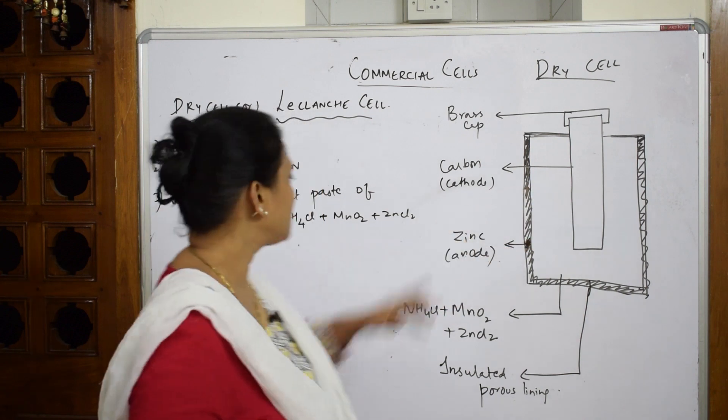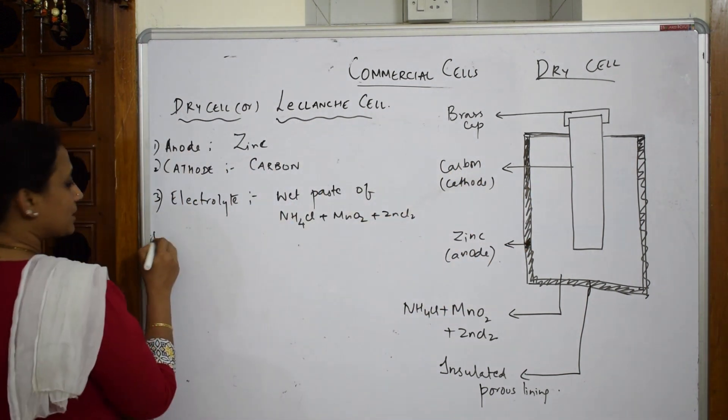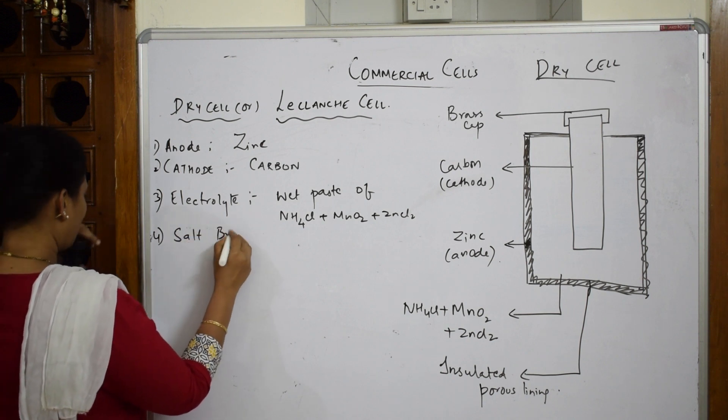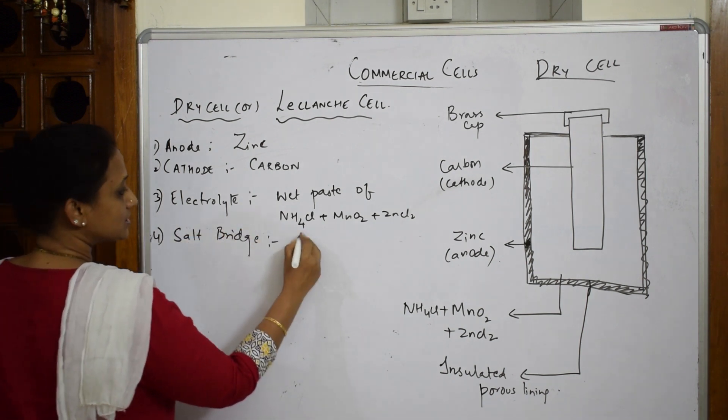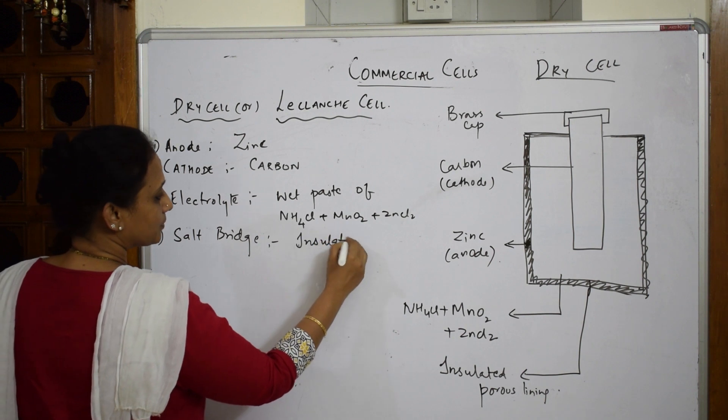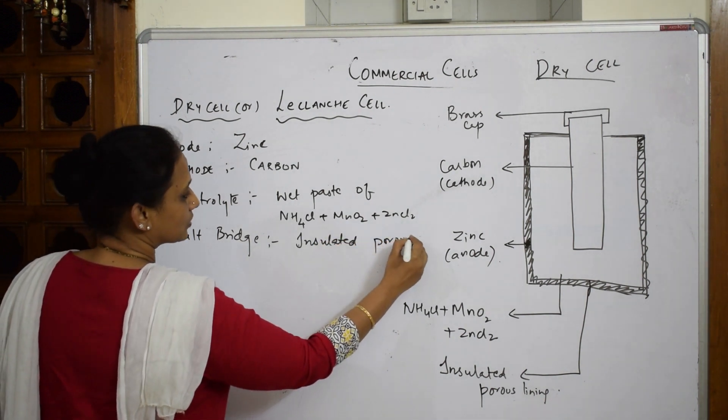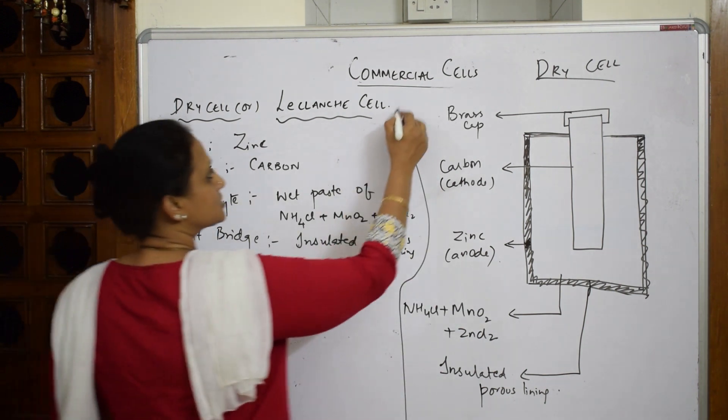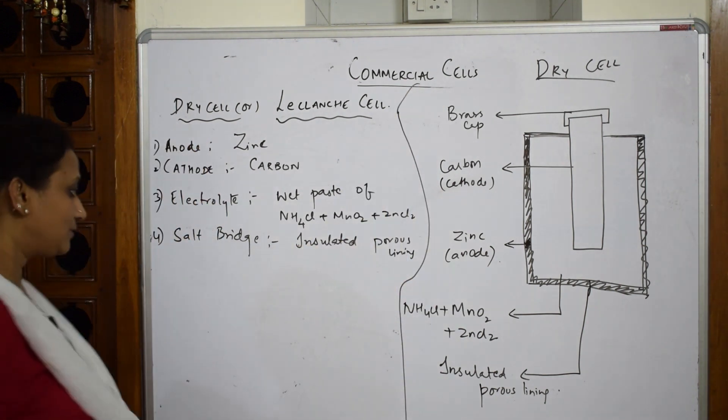Remember, for this one it acts as a salt bridge between the zinc electrode and the paste, or even the anode. The role of the salt bridge is the insulated porous lining. I have to write all these parameters, then only I can expect the examiner to give me marks.